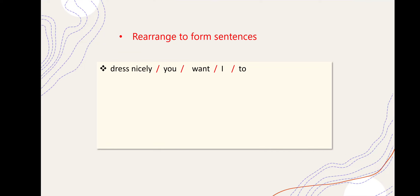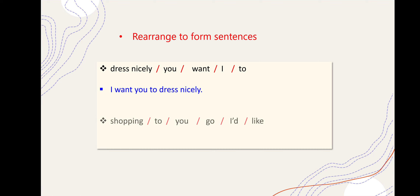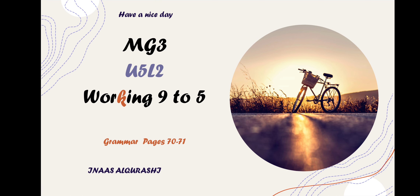Rearrange to form a sentence. 'dress nicely / you / want / I / to' - 'I want you to dress nicely.' أنا أريد أن تلبس بطريقة جميلة. 'shopping / to / you / go / I'd like' - 'I'd like you to go shopping.' نحفظها زي ما هي: I'd like you + to + الفعل المجرد. I'd like you to go shopping.